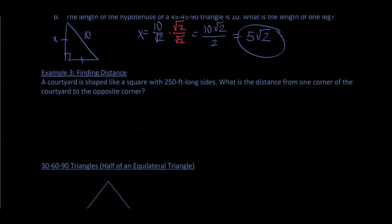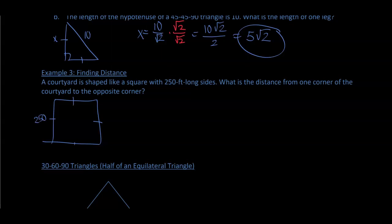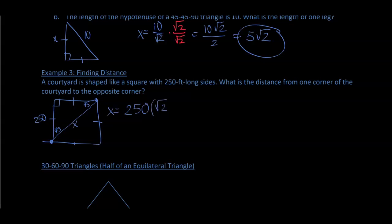Finding distance: a courtyard is shaped like a square with 250-foot long sides. What is the distance from one corner of the courtyard to the opposite corner? Because this is a square, each angle created by the diagonal is 45 degrees. So x equals 250 times the square root of two — the diagonal is 250 times the square root of two feet.